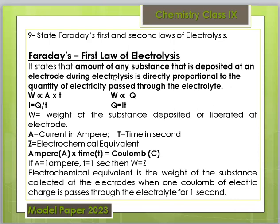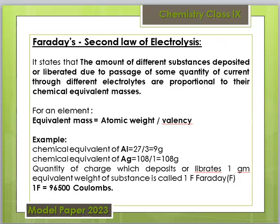What you should write: the amount of any substance that is deposited at an electrode during electrolysis is directly proportional to the quantity of electricity. For the Second Law: the amount of different substances deposited or liberated due to the passage of the same quantity of current through different electrolytes are proportional to their chemical equivalents. With a battery in series, each cell contains a different electrolyte, so the mass deposited in each cell is different.